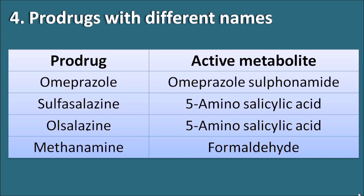Some prodrugs have active metabolites that are not used independently — they are always given as prodrugs. For example, omeprazole, the well-known proton pump inhibitor, is actually a prodrug converted to omeprazole sulfonamide as its active metabolite. Sulfasalazine is a prodrug of 5-aminosalicylic acid, cleaved by azoreductases. Similarly, olsalazine is also a prodrug of 5-aminosalicylic acid. Methenamine, used to treat urinary tract infections, is converted into formaldehyde within the urine, which exerts its toxic effect on bacteria — so methenamine is also considered a prodrug.